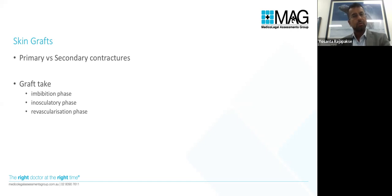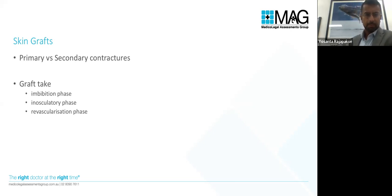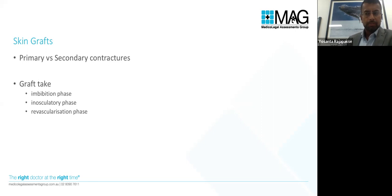How does a graft take? It relies on its donor blood supply through a process of imbibition, inosculation and revascularization. Basically, you put the graft on, it adheres or glues onto the recipient site, then there is diffusion of nutrients, blood vessels grow, revascularization occurs, and we get an incorporated graft.